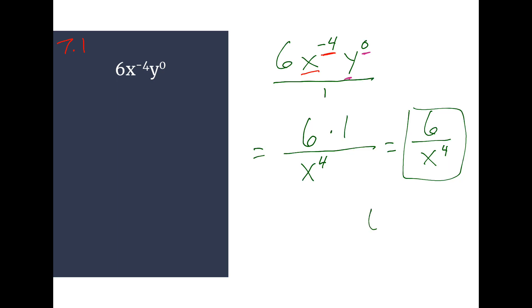To enter that on Schoology, you want to do 6 slash x. And then the caret button, which is shift 6 on your keypad, then a 4. So 6 over x to the 4th.